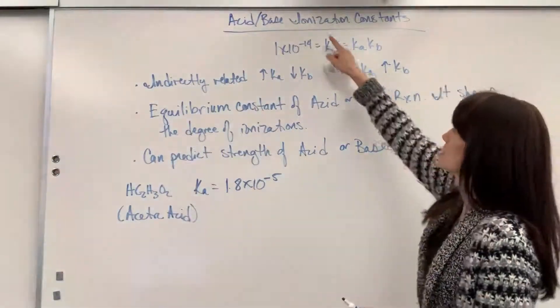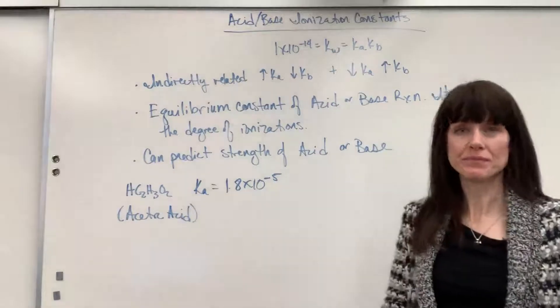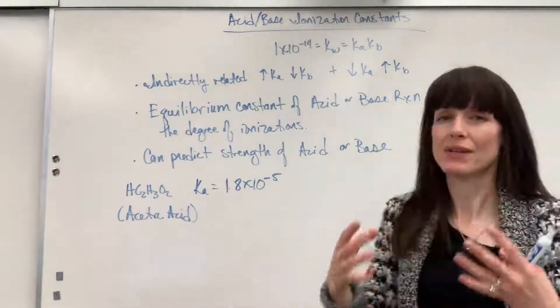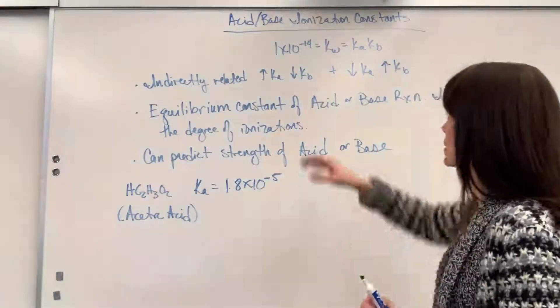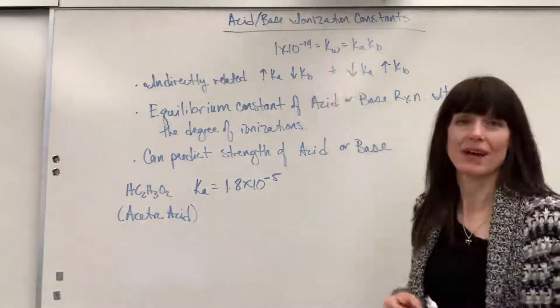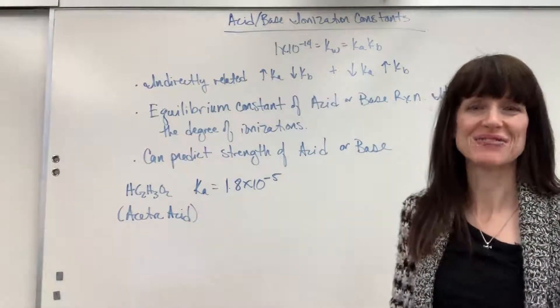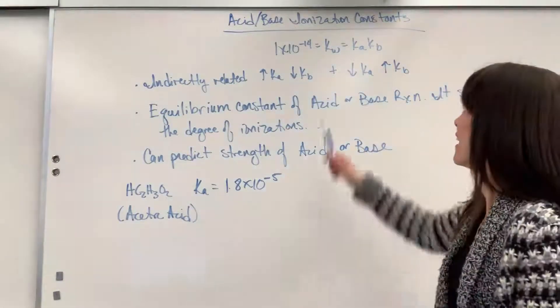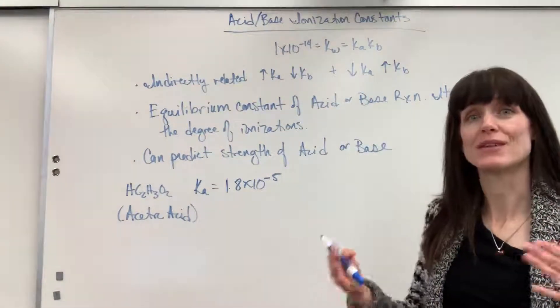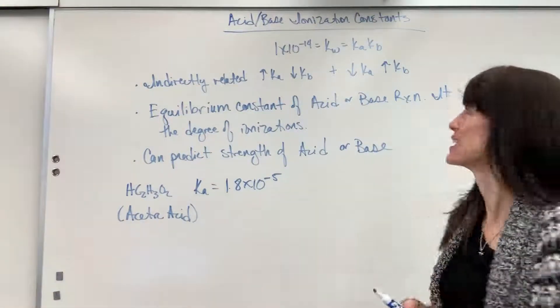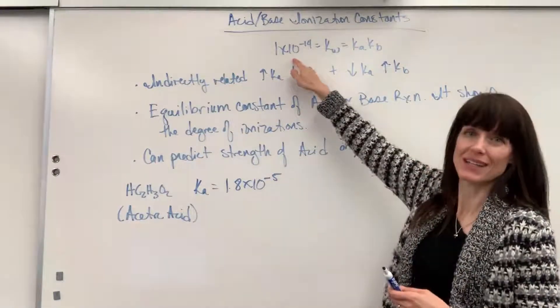And we'll use this term ionization. Now, to really understand the idea of ionization, I want to show you this formula. It's going to be the Kw, the equilibrium constant of water, when it does that auto ionization, is 1 times 10 to the minus 14.